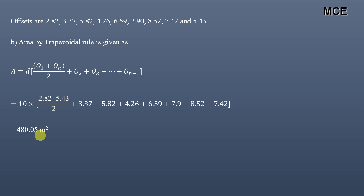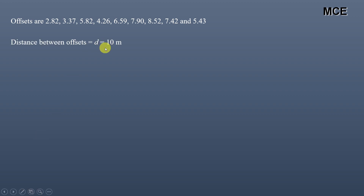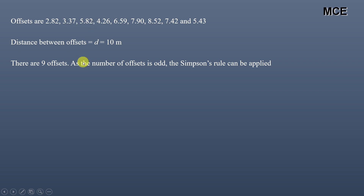Now we find the area by Simpson's rule. The distance between offsets is 10 meters. Remember that Simpson's rule is only valid when the number of offsets is odd (or equivalently, the number of segments is even). If you have an even number of offsets, you must divide the area in two parts: apply Simpson's rule up to the second-last segment, find the last segment's area by the trapezoidal rule, and add them together. Here we have nine offsets, which is odd, so Simpson's rule can be applied directly.